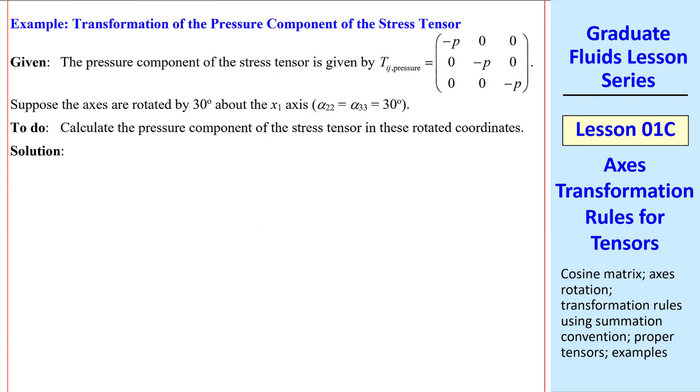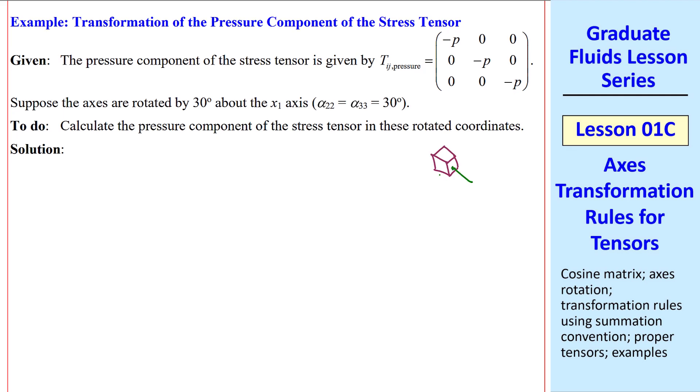Now I'll do another example using a second-order tensor. The pressure component of the stress tensor is given by this in matrix form. Pressure acts inward normal on the surfaces of any fluid element, where the normals of these faces are aligned with the axes. Now suppose we rotate the axes by 30 degrees about the x1 axis. Mathematically positive counterclockwise means that alpha_22 and alpha_33 are 30 degrees.